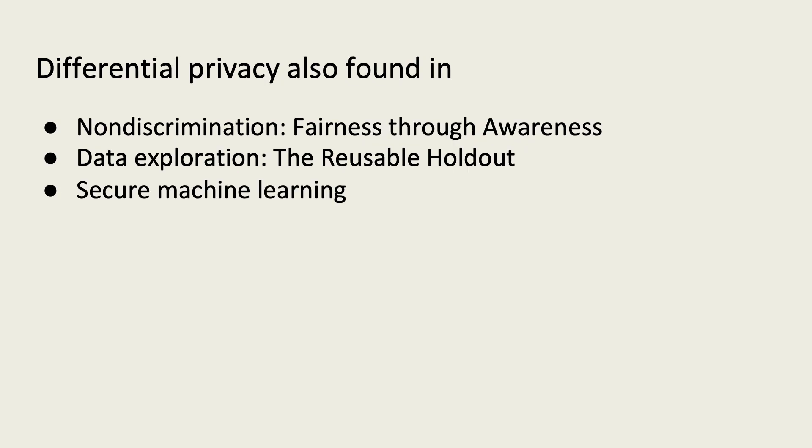In addition to explaining the disagreement in prior work, the realization that differential privacy is a bound on effect sizes explains why differential privacy has found applications away from privacy, such as in non-discrimination, data exploration, and secure machine learning. Causation cuts across science and engineering tasks, and we should expect it to appear in many applications.